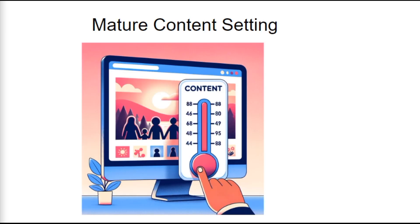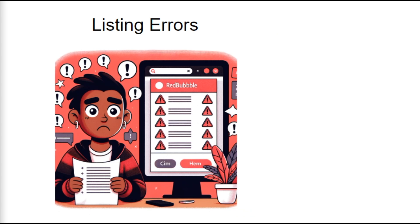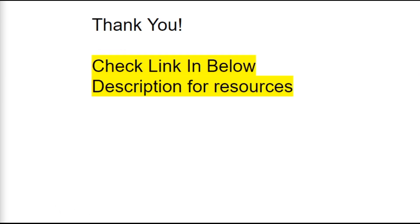Match your content settings. If your design is adult-themed and you haven't flagged it as such, it might not be visible to all users — make sure to flag your content correctly. Lastly, errors during the listing process can mess things up, so ensure all steps in the listing process are followed correctly.